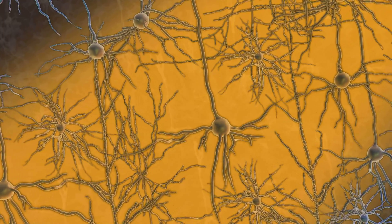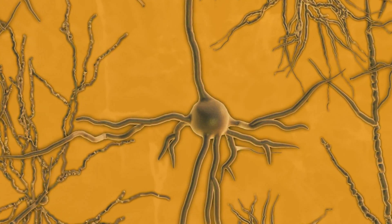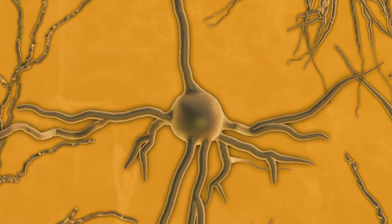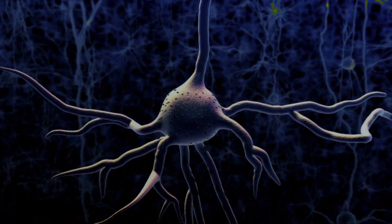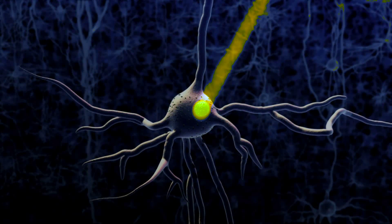Once researchers insert this microbe's light sensitive protein into target neurons, they can turn those neurons off by shining orange light on them, and thereby stop activated behaviors.